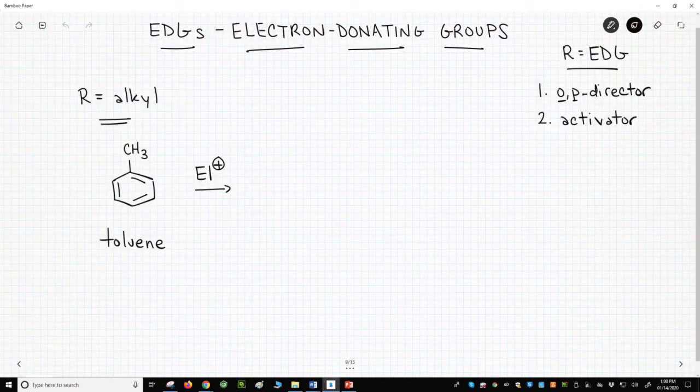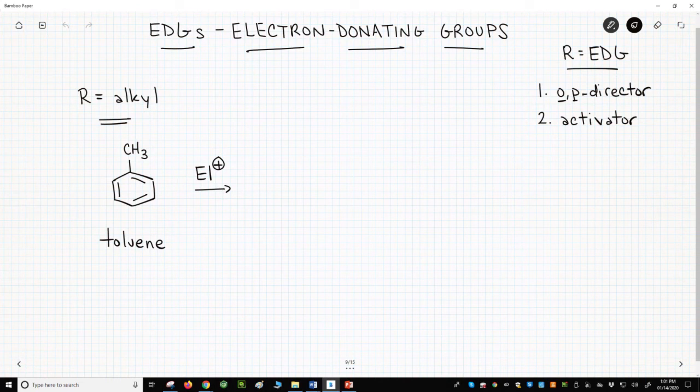In the upper right, we see a recap of the previous video. Electron donating groups, or EDGs, are R-groups that behave both as ortho-para directors and activators. Great, but what are the common electron donating groups?